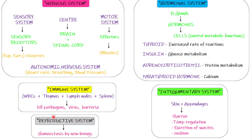The reproductive system plays its role in maintaining homeostasis by producing new beings to create a balance. This was a brief introduction to the units we will study in detail — there is a separate unit on all these topics. This was part one of chapter one.